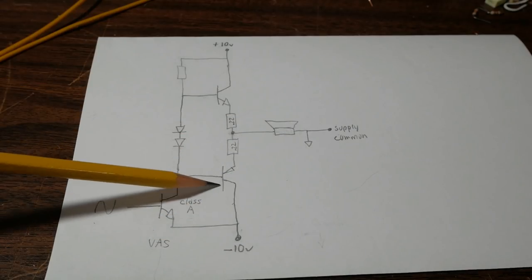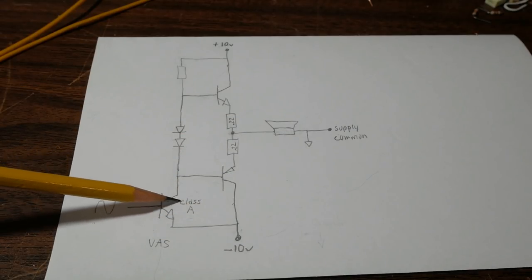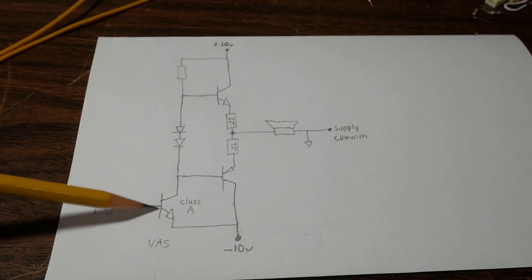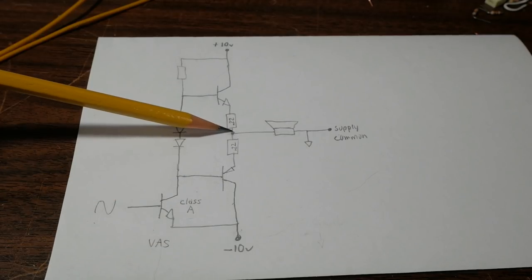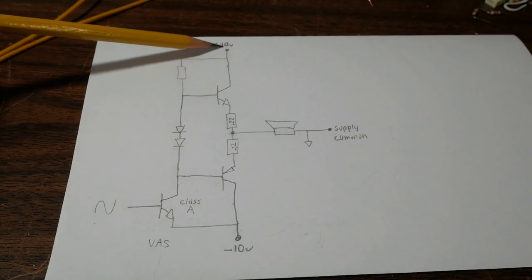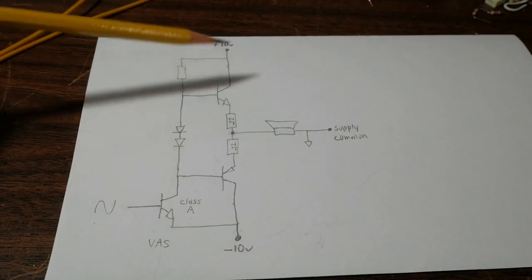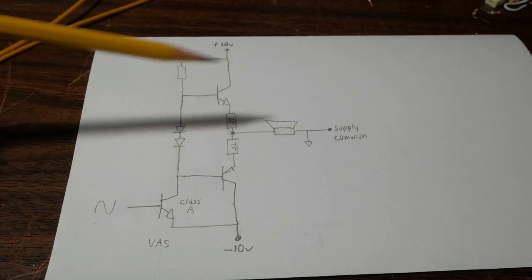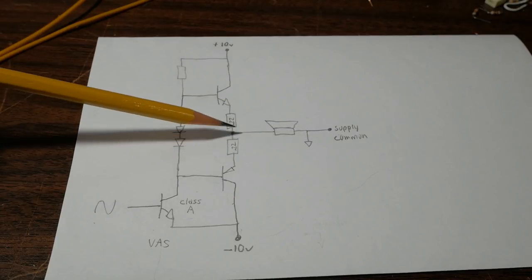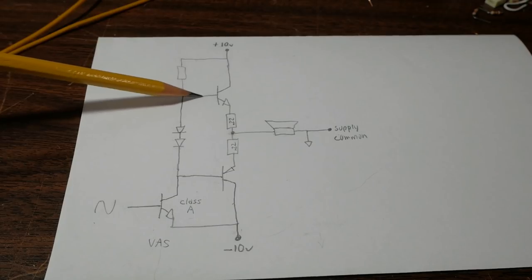So using conventional current flow, we have current coming from the supply common, through the load, through the transistor, back out the negative rail and cycle around like this. Of course, some of the current is going to go into the base and through this transistor, which is driving it. Now when this output voltage is high towards the positive rail, something interesting happens.